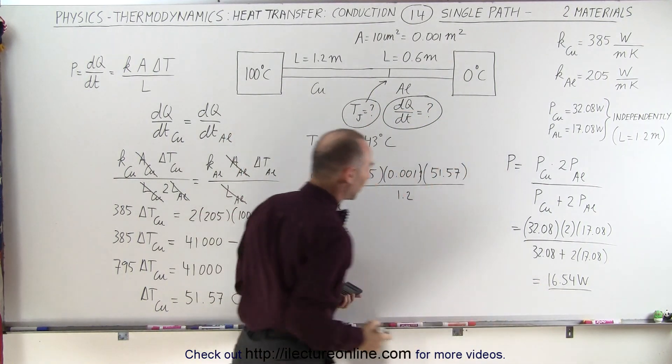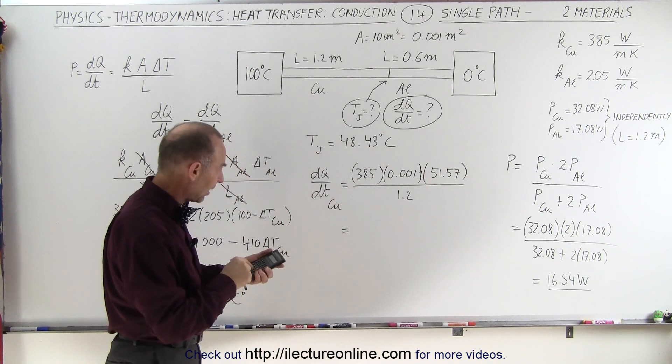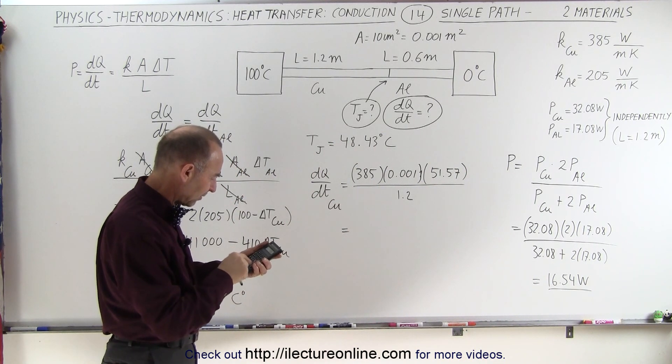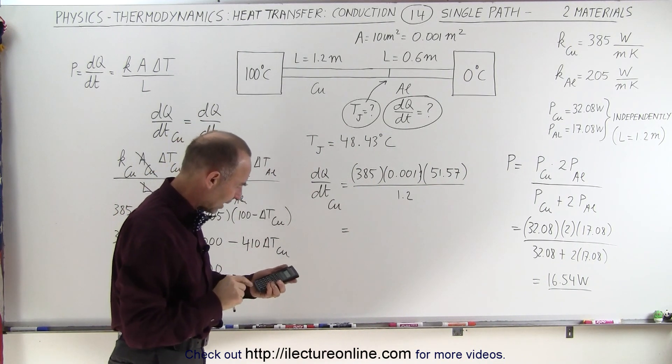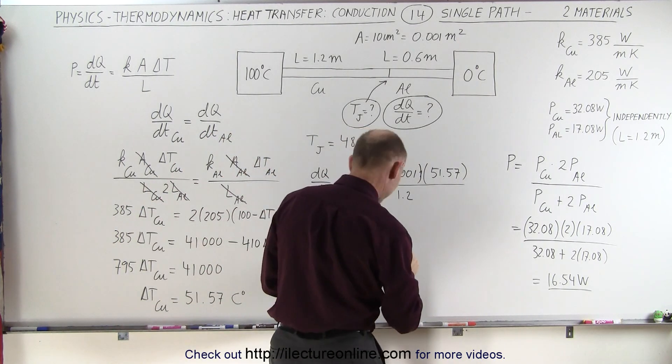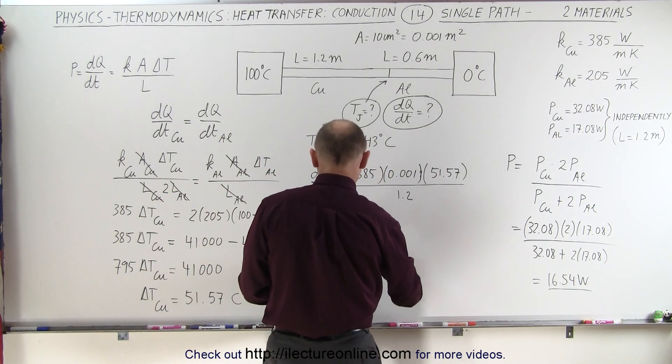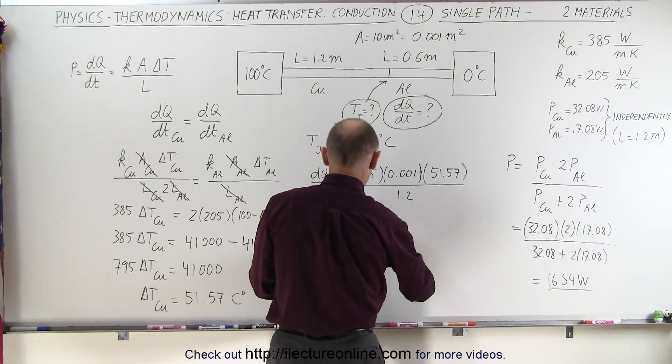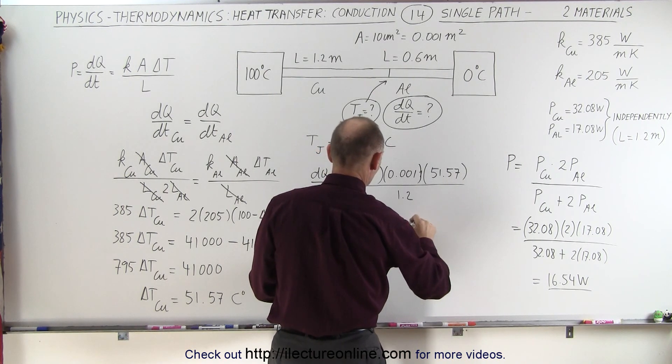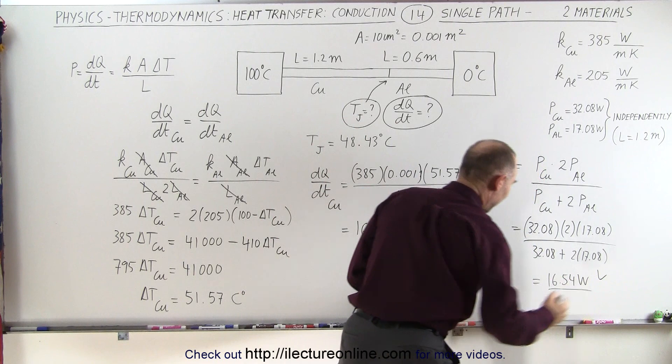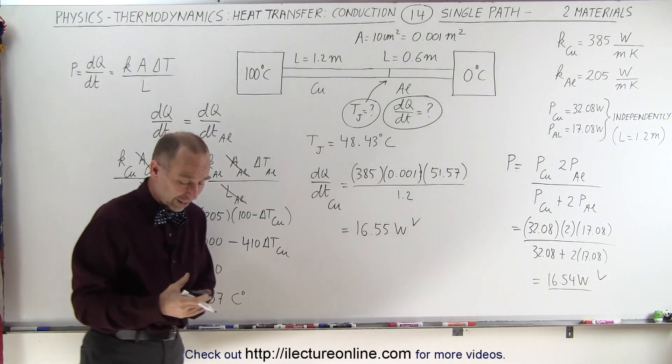So times 0.385 divided by 1.2 equals, and 16.55, well, I'm off by one decimal point, that's just a round-off error, 55 watts. So you can see that we did get the same result, except for the small round-off error.